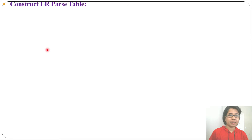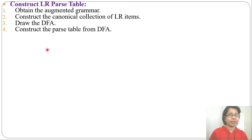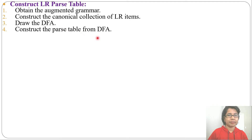Construction of the LR parse table involves four steps: first, obtain the augmented grammar; second, construct the canonical collection of LR items; third, draw the DFA; fourth, construct the parse table from the DFA. So for LR parsing, we need augmented grammar, then LR items, then the DFA, then the parse table.